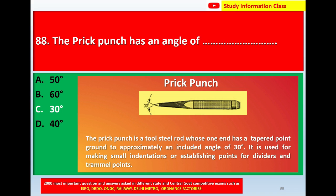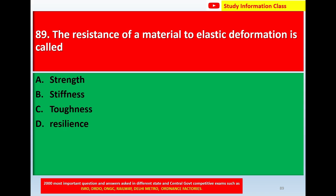Question number 89: The resistance of a material to elastic deformation or deflection is called — option A: strength, option B: stiffness, option C: toughness, option D: resilience. Correct answer is option B: stiffness.